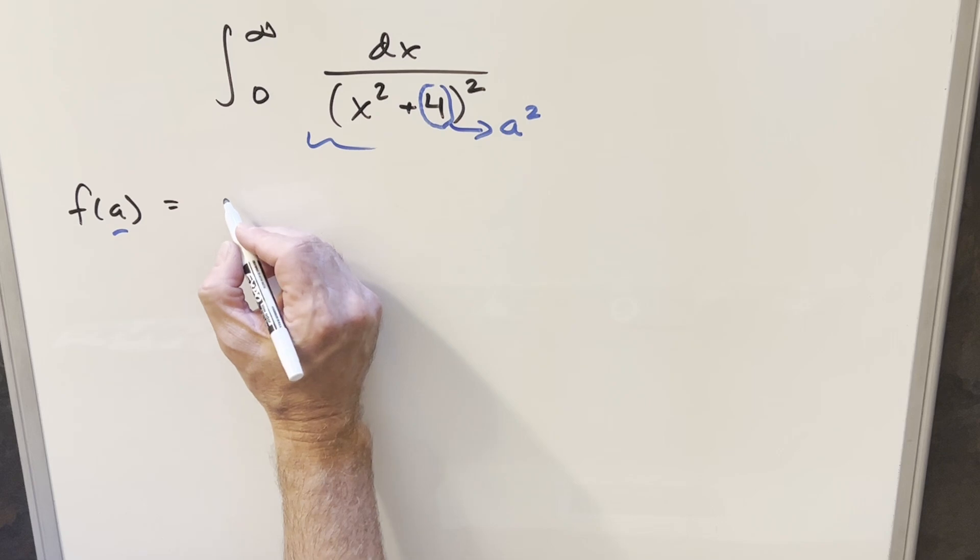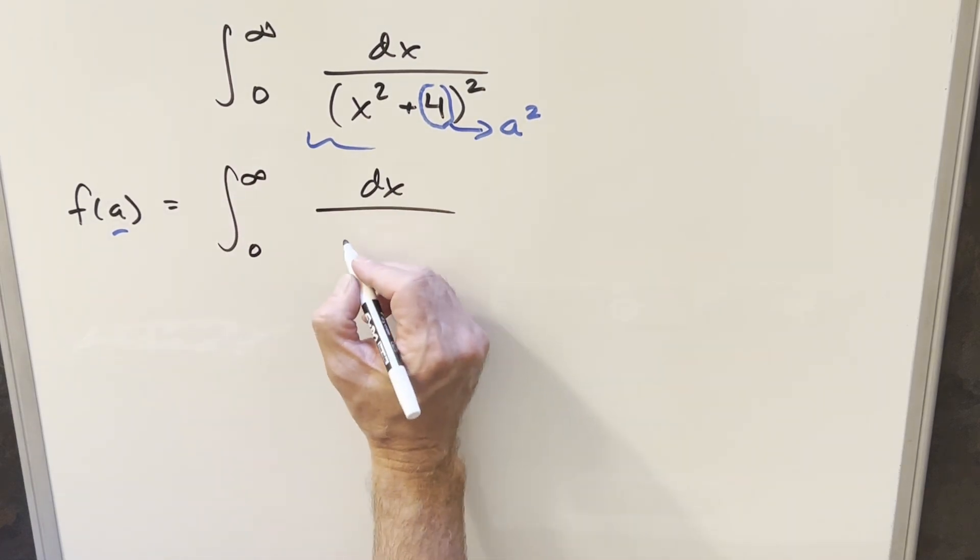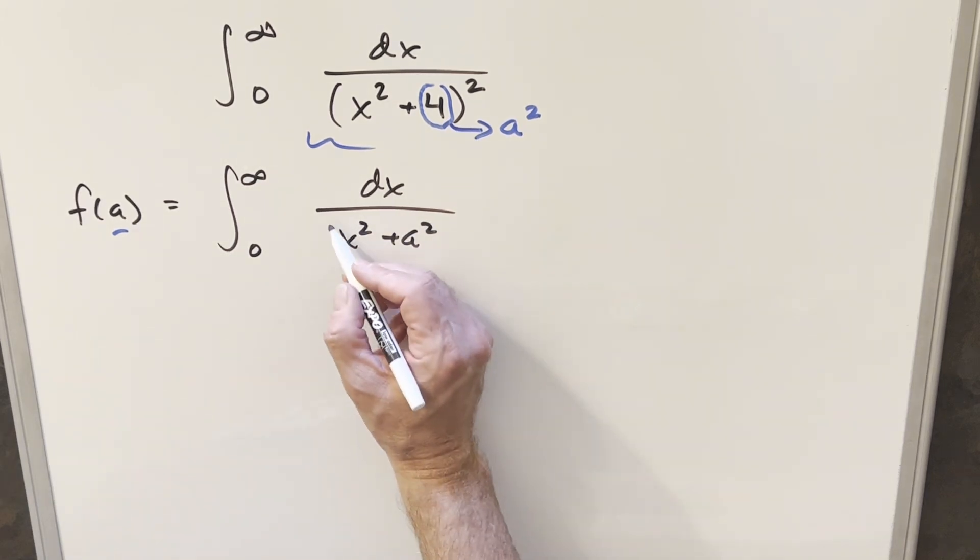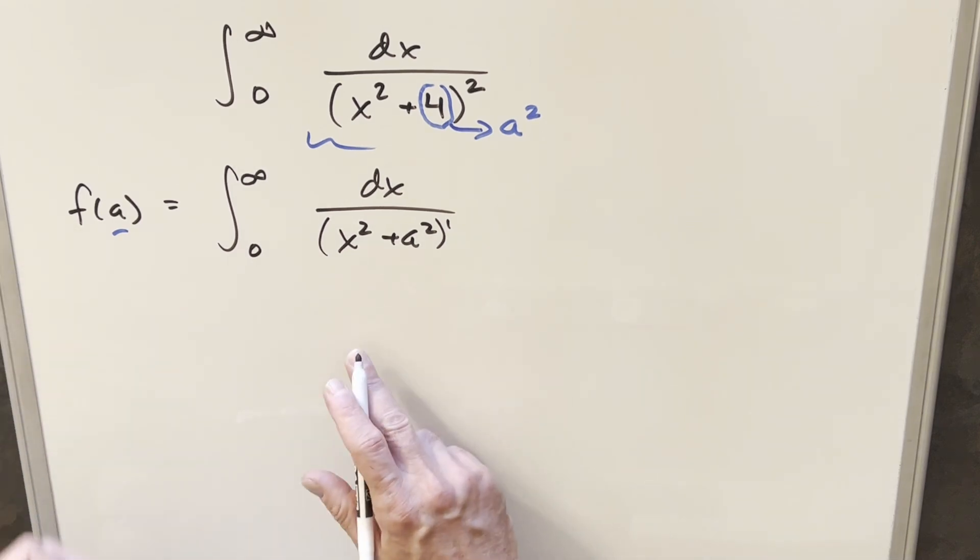And so when I do this, we're going to have, we're still going to integrate from 0 to infinity, but what we're going to do is we're going to have just dx over x squared plus a squared. Noticing it's like we just have a 1 coefficient here instead of the 2 here, because that way when we differentiate, we're going to end up getting the squared term later on.